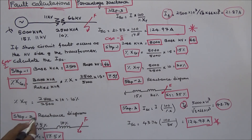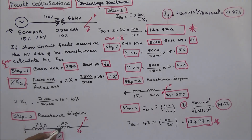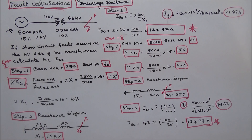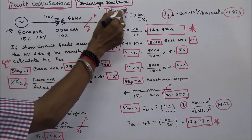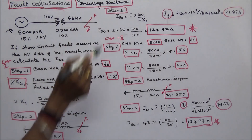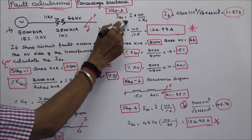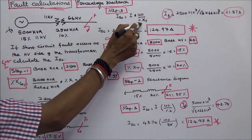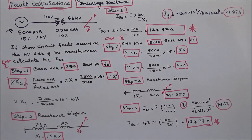Step 2: draw the reactance diagram. This is the generator reactance and this is the transformer reactance. The total reactance from the fault point to the neutral point is 7.5 plus 10, which equals 17.5%. Step 3: calculate the short circuit current ISC, which equals the full load current I_FL multiplied by 100, divided by the total percentage reactance of 17.5.